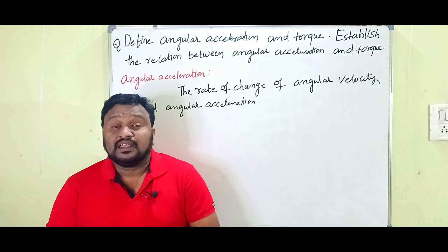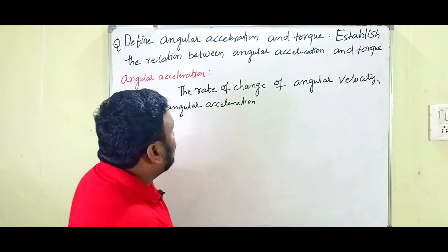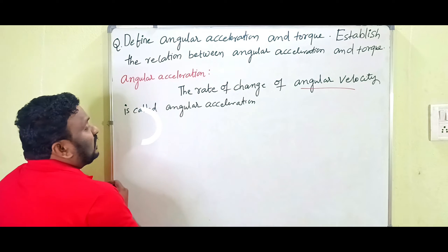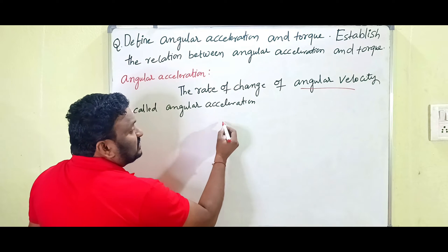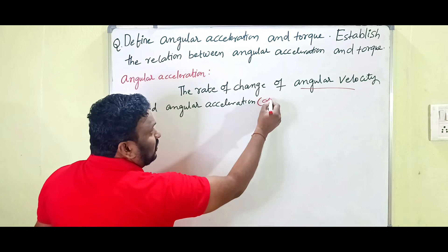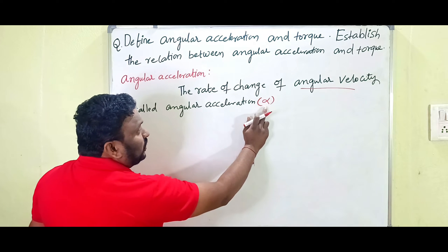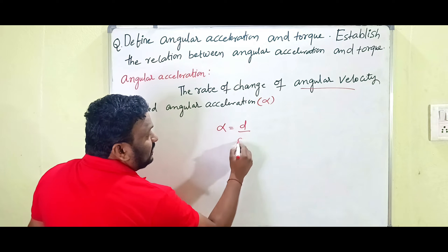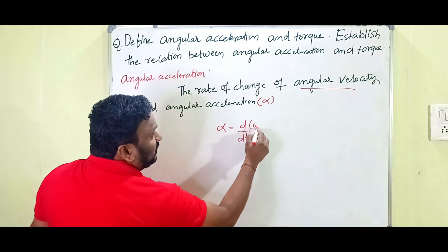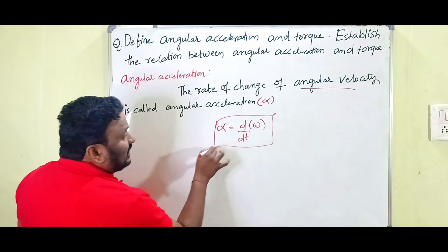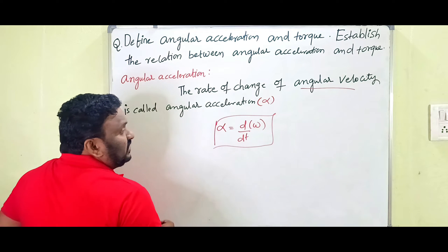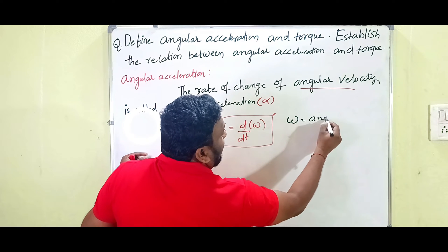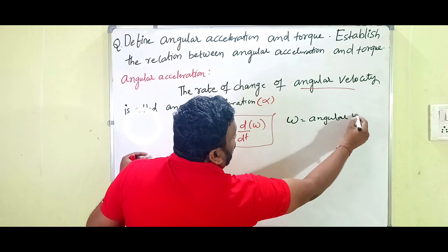Angular acceleration is denoted by the symbol alpha (α). The formula can be written as: α = dω/dt. This is the formula for angular acceleration, where omega (ω) is the angular velocity.